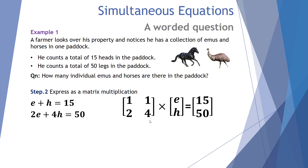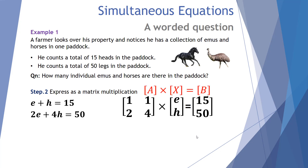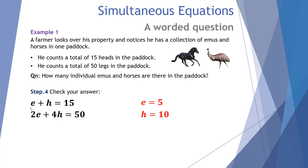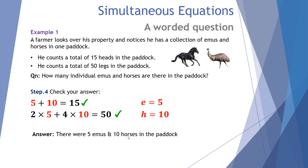Step two — set up the matrix equation. We have 1E and 2E in the first column, 1H and 4H in the second column, with E and H as unknowns, equal to totals 15 and 50, in the format A times X equals B. To find the unknown X we take the inverse of A and multiply it by B. We end up with E and H equal to 5 and 10 — so 5 emus and 10 horses. Checking: 5 plus 10 equals 15 ✓, and 2 times 5 plus 4 times 10 equals 10 plus 40 equals 50 ✓.